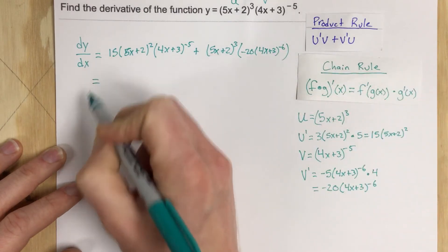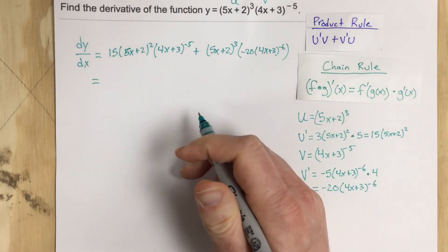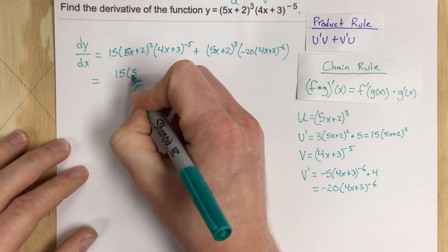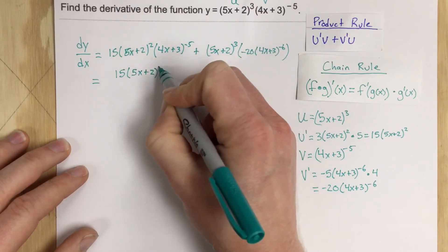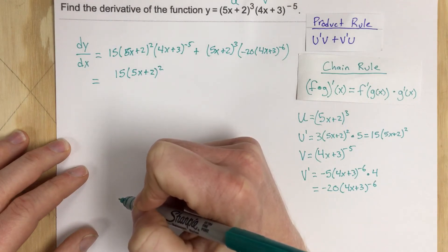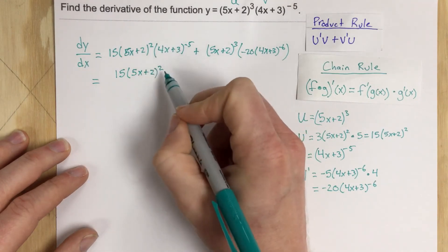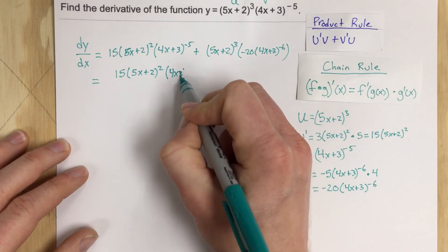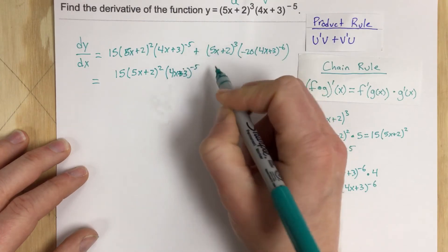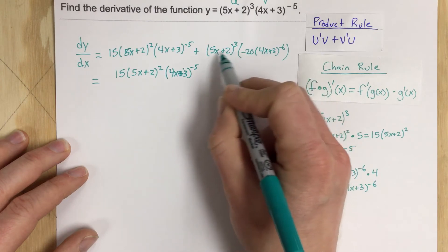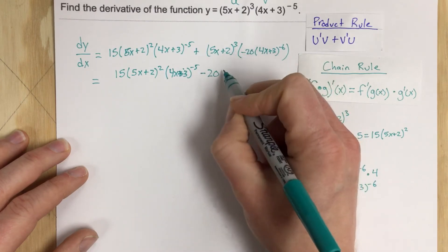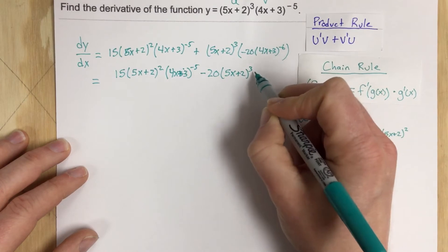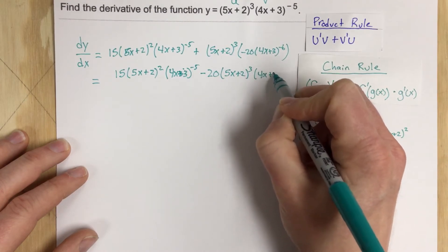Now we're going to use some algebra to rearrange this. We'll leave the terms in the numerator: we have 15 times 5x plus 2 to the second power times 4x plus 3 to the negative 5, and then negative 20 times 5x plus 2 to the third times 4x plus 3 to the negative 6.